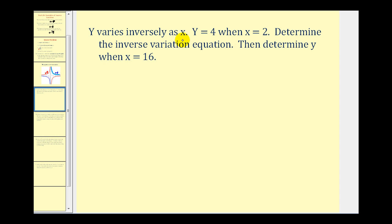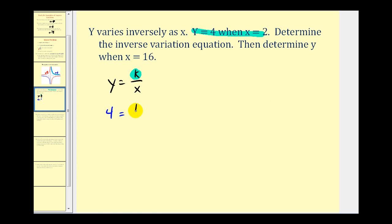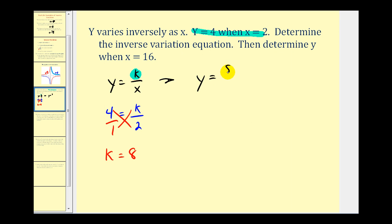Here we're told that Y varies inversely as X, which means we'll use the equation Y equals K divided by X. We're told Y equals 4 when X equals 2. We want to find K first. By substitution, 4 equals K divided by 2. Cross multiplying gives K equals 4 times 2, which is 8. So our inverse variation equation is Y equals 8 divided by X.